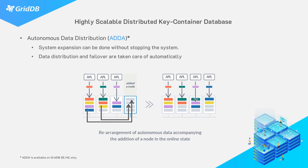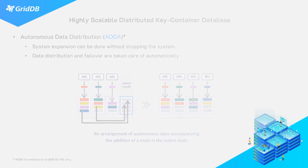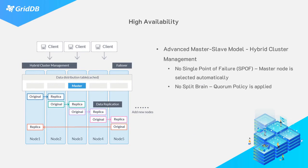Data distribution and failover are also taken care of for you. GridDB is also very highly available. It uses a hybrid cluster management system which takes the best aspects of both master-slave and peer-to-peer. The issue with master-slave systems is that they end up having one single point of failure — the master node. The issue with peer-to-peer is a massive overhead caused by the constant fragmenting of data across all nodes.